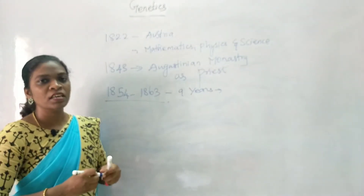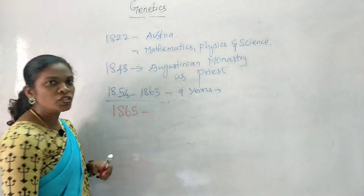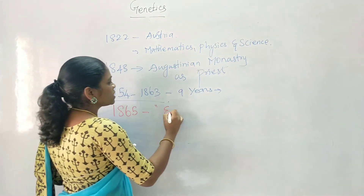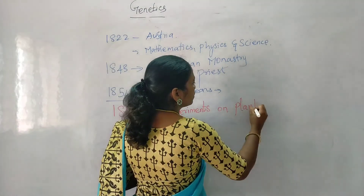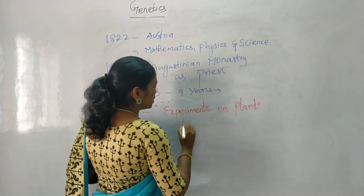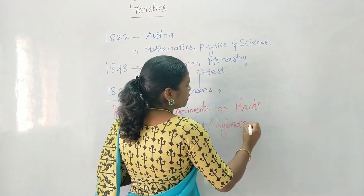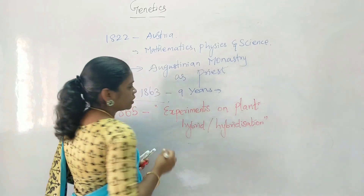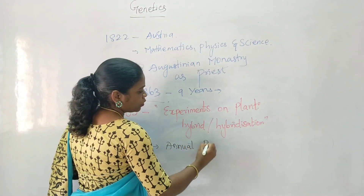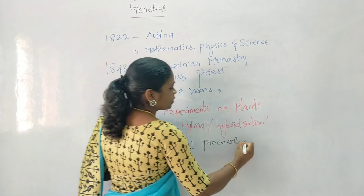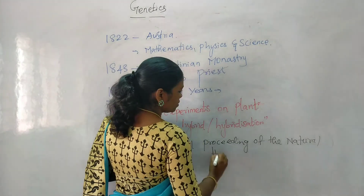From 1854 to 1863 — around 9 years — he spent time on his experiments on pea plants. In the year 1865, he published his paper named 'Experiments on Plant Hybrids' or hybridization. This was published in a magazine called the Annual Proceedings of the Natural History Society.